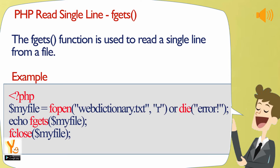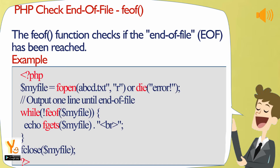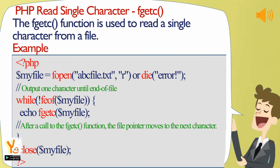PHP read single line - fgets: the fgets function is used to read a single line from a file. PHP check end of file - feof: the feof function checks if the end of file has been reached. PHP read single character - fgetc: the fgetc function is used to read a single character from a file.